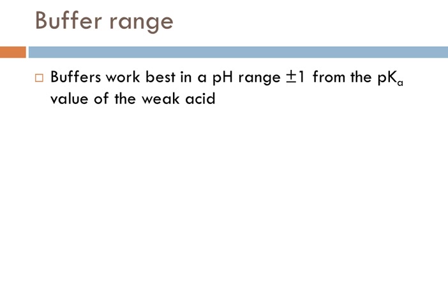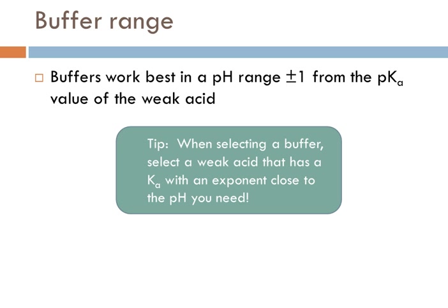Two other things to mention briefly: buffer range. Buffers work best in a pH range of plus or minus 1 from the pKa value of the weak acid, where pKa is the negative log of Ka. So the exponent part of the Ka value gives you the clue as to the optimal pH range for that buffer. For example, if your weak acid has a Ka of 1 × 10⁻⁴, that buffer works best in a pH range of 3 to 5. That's your quick back-of-the-envelope way of figuring that out.